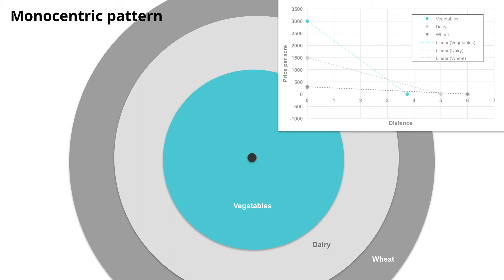Thinking about this in two dimensions rather than just looking at the curves, if we imagine these as circular rings extending out in all directions from the market center, we can expect the inner area to be consumed by vegetables, the middle ring by dairy, and the outer ring by wheat — based purely on the underlying economic principles of each crop. This is the primary core of bid-rent theory and the primary innovation of von Thunen: taking the fundamental economic principles of a given good and transforming them into spatial aerial extents of economic activity in relation to the market center.